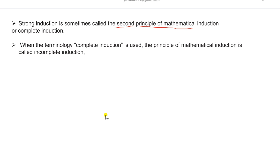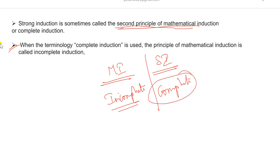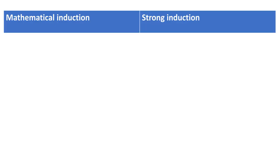Strong Induction is sometimes called the Second Principle of Mathematical Induction. Mathematical Induction can be thought of as incomplete induction — just a few steps are proven. Strong Induction, in which we prove for all positive integers, is called complete induction. Strong Induction is also known as complete induction or the second principle of mathematical induction.